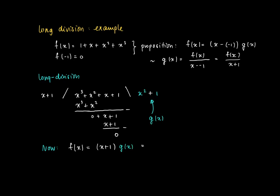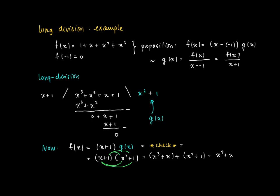Let's verify: (x + 1)·(x² + 1). Taking all combinations: x·x² + x·1 + 1·x² + 1·1 = x³ + x + x² + 1. Reordering, this equals x³ + x² + x + 1, which indeed equals f(x). So the factorization is confirmed.